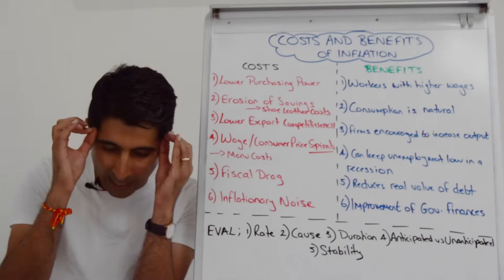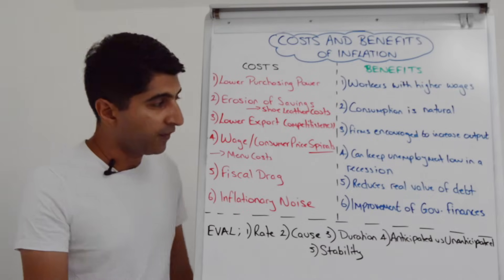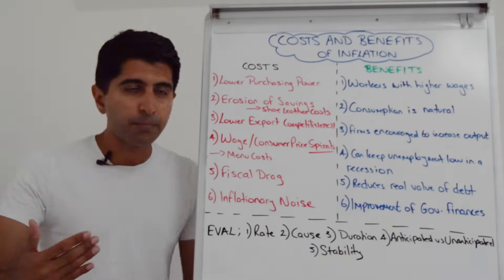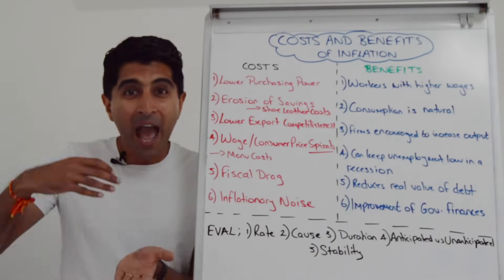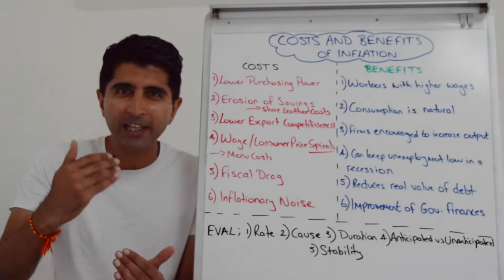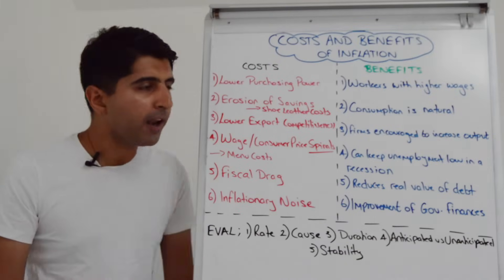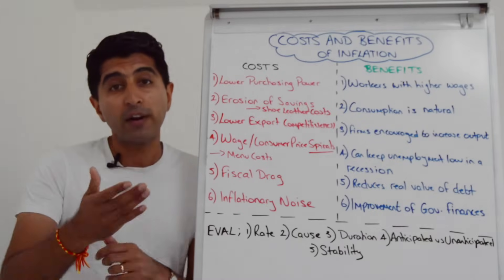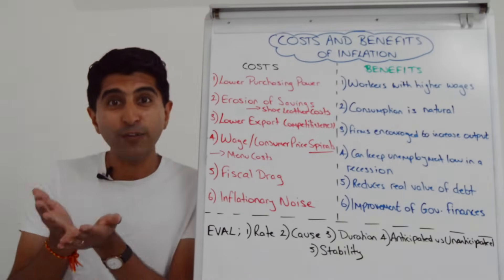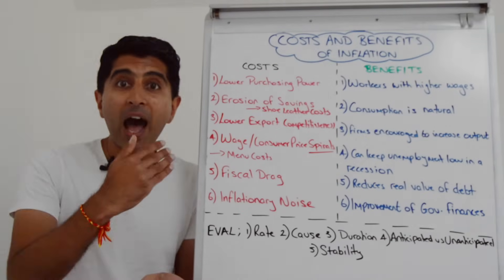Perhaps the biggest issue with inflation is the risk of it becoming anticipated and then spiraling, potentially creating hyperinflation. This can happen through a wage-price spiral: as inflation is high and workers anticipate it, they bargain for higher wages to keep up with the cost of living. If firms grant those pay rises, their cost of production increases, and they pass on those higher costs via higher prices — increasing inflation further.